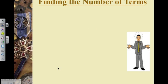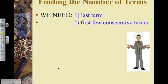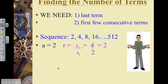In order to find the number of terms, we had a similar question with arithmetic sequences. And just like before, in order to solve this question, we need the value of the last term and the first few consecutive terms. The reason that we need the first few consecutive terms is because we need to be able to identify the value of a and my common ratio.